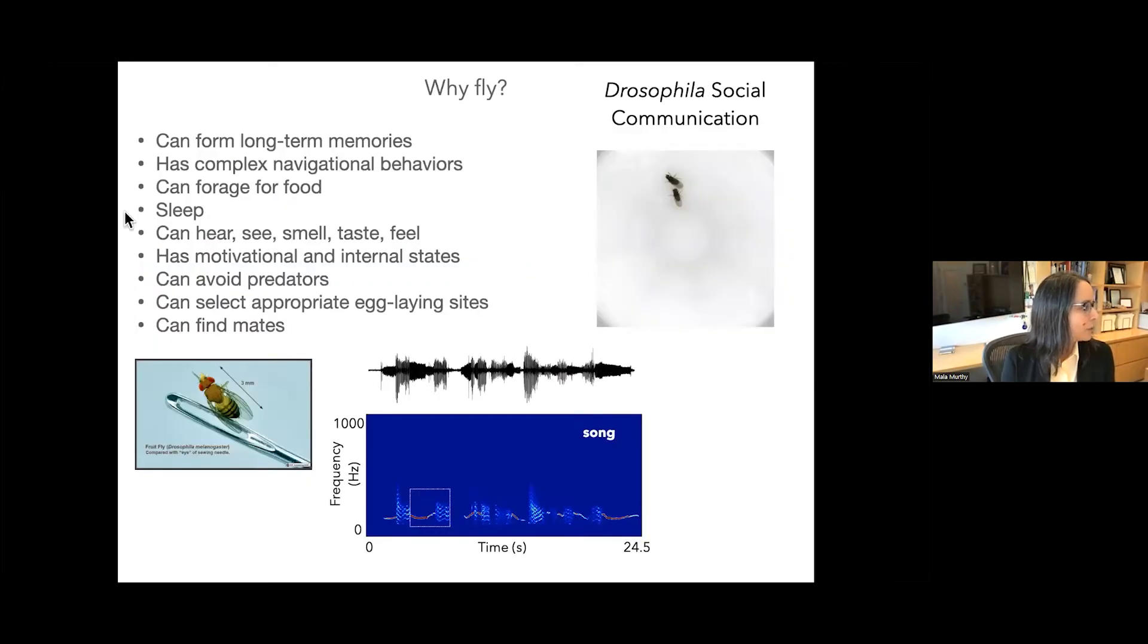Here's a fruit fly - it's about three millimeters long, its head is about a millimeter across. It's tiny, but nonetheless you can do a lot of really cool things. Flies can form long-term memories, they have complex navigational behaviors, they can travel long distances in search for food, they can forage for food. Flies sleep. They have senses like eyes, ears, nose - they can hear, see, smell, taste, and feel. They have motivational and internal states, drives to do different behaviors. They can avoid predators, they can select appropriate egg laying sites, and they can find mates.